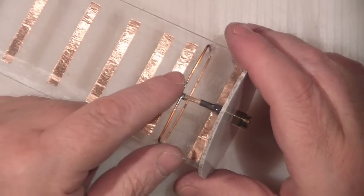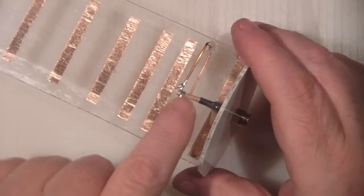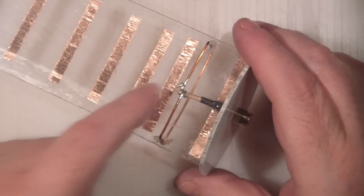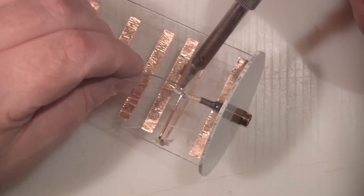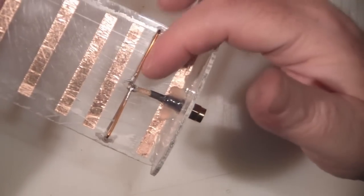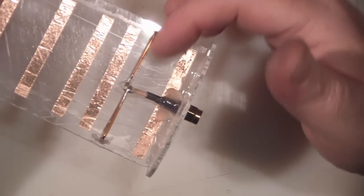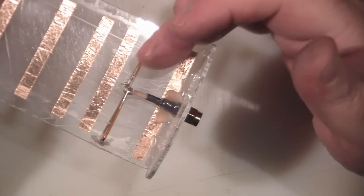So once you've got your shield soldered on, just bend this center element round and we'll solder that onto the other side. So with that solder in place, what we've actually got here is a closed loop dipole antenna as our element.